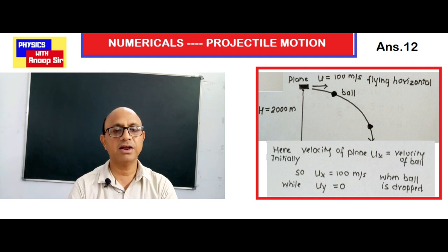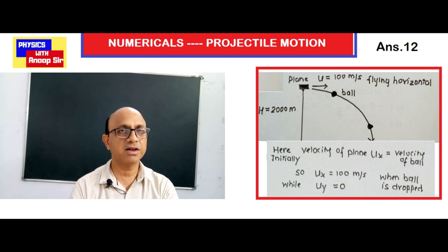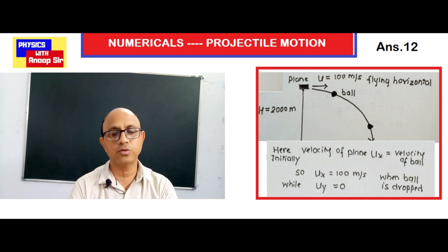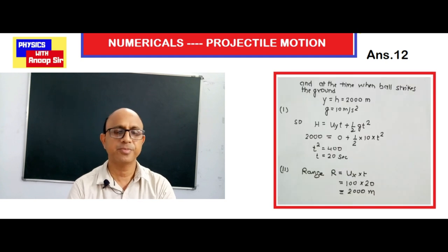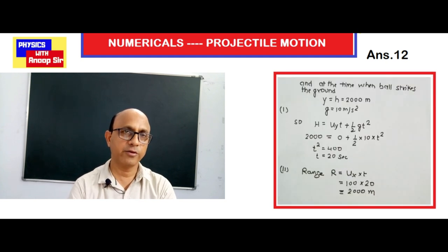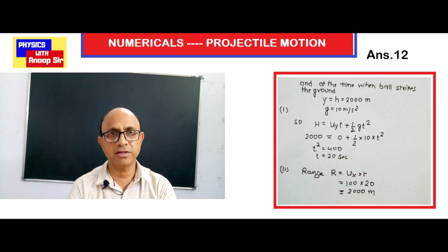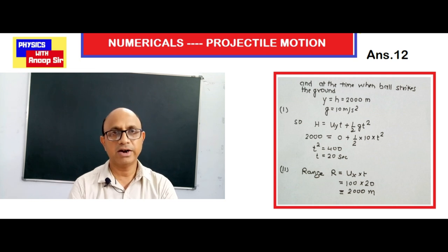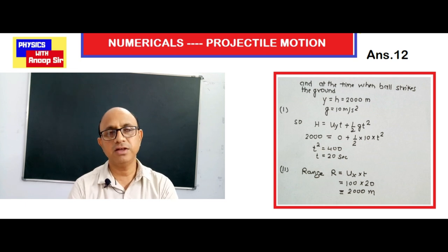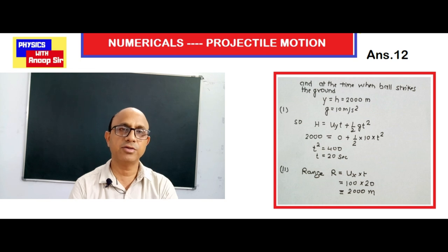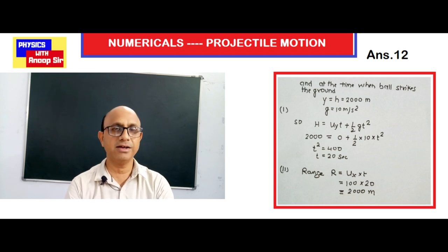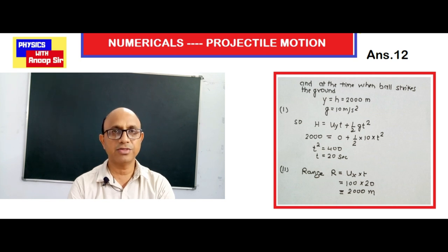The vertical component u_y will be 0 because the ball is dropped — there is no initial vertical velocity. The height to cover is 2000 meters and g = 10 m/s². Using h = u_y × t + ½gt²: 2000 = 0 + ½ × 10 × t², so t² = 400 and t = 20 seconds.